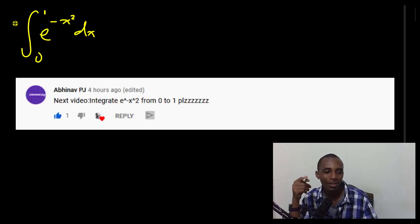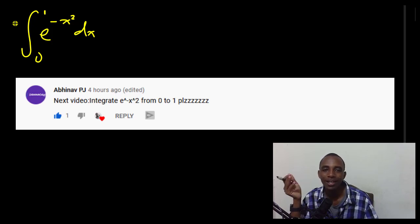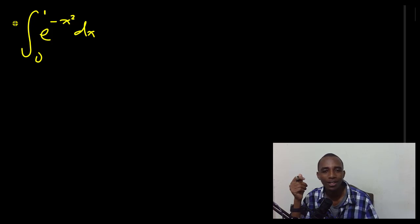It's the integral from 0 to 1 of e to the power negative x squared dx. Now this is a very famous and common integral. If you're familiar with probability and statistics, this actually appears to be kind of a Gaussian distribution kind of function. Only that here the limits are taken from 0 to 1 as opposed to negative infinity to positive infinity, which is the way that it usually appears.